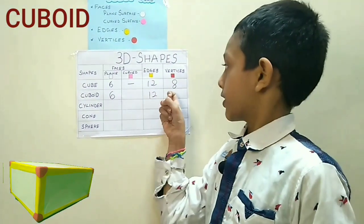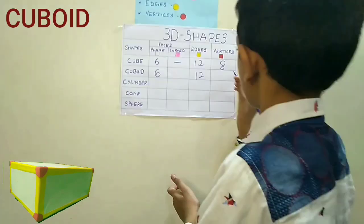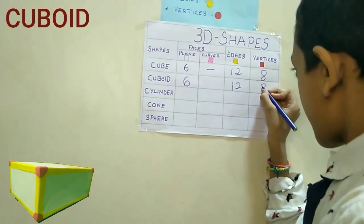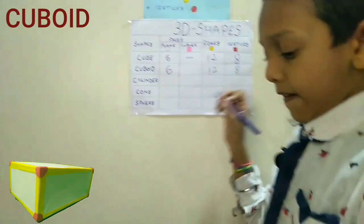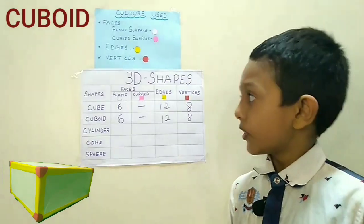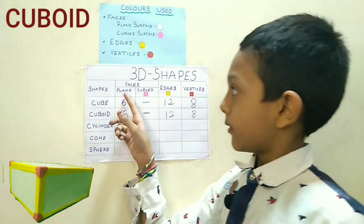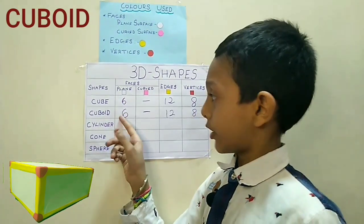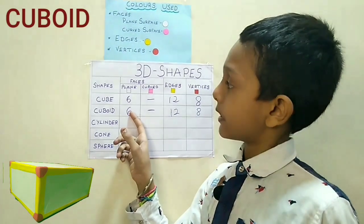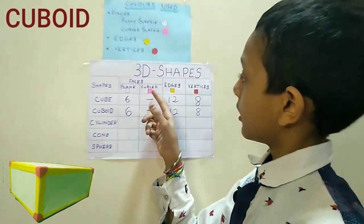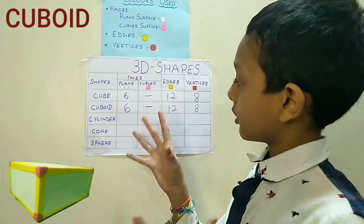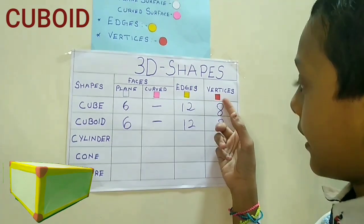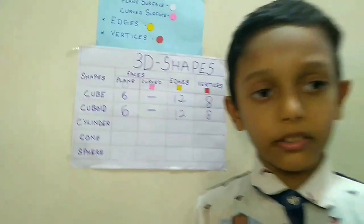So we will write here 12. So the cuboid has 6 plane surfaces, no curved surface, 12 edges and 8 vertices.